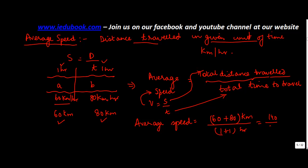Or 140 upon 2. If you cut it out it gives you 70. 70 kilometers per hour. So this is the average speed of the person as he moved from these two areas.